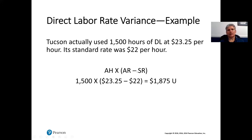The actual rate was $23.25 and the standard is $22. That difference is then multiplied by the actual hours of 1,500. Because the rate was higher than expected, we come up with a $1,875 unfavorable variance. That's our rate variance.